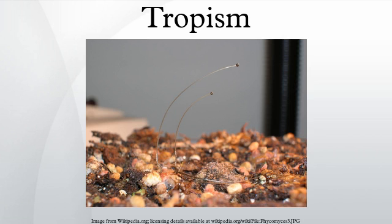Viruses and other pathogens also affect what is called host tropism, tissue tropism, or cell tropism, in which case tropism refers to the way in which different viruses and pathogens have evolved to preferentially target specific host species, specific tissue, or specific cell types within those species.